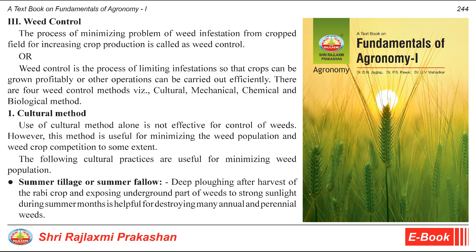Cultural Method. Use of cultural methods alone is not effective for control of weeds. However, this method is useful for minimizing weed population and weed-crop competition to some extent. The following cultural practices are useful: summer tillage or summer fallow — deep plowing after harvest of the rabi crop and exposing underground parts of weeds to strong sunlight during summer months — is helpful for destroying many annual and perennial weeds.